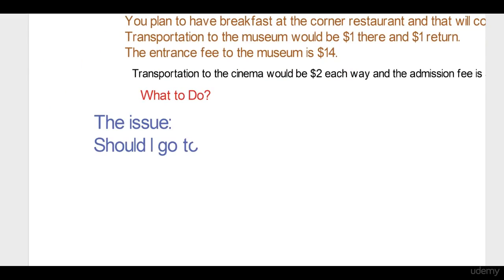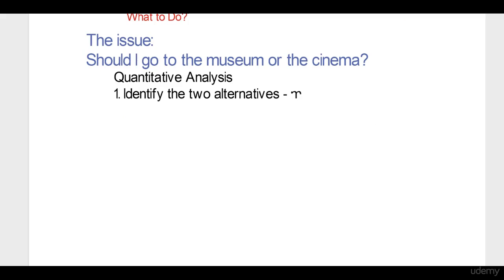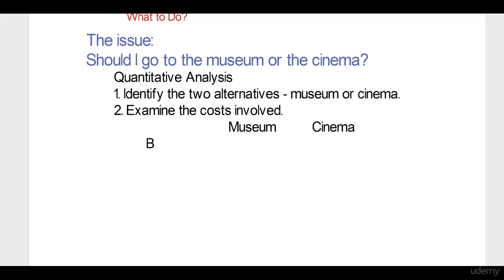First step: identify the issue. Should I go to the museum or the cinema? These are the two alternatives. I begin with quantitative analysis and identify the two alternatives: one, the museum; two, the cinema. Then I examine the costs involved in attending each of them.